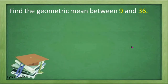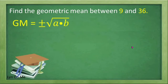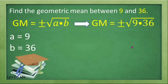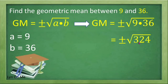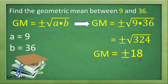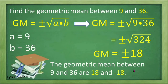Let us find the geometric mean between 9 and 36 using another formula. GM, or geometric mean, is equal to positive and negative square root of A times P, where A is the first given number and P is the second given number. So GM is equal to positive and negative square root of 9 times 36. 9 times 36 equals 324, and the square root of 324 is equal to positive and negative 18. Therefore, the geometric means between 9 and 36 are 18 and negative 18.